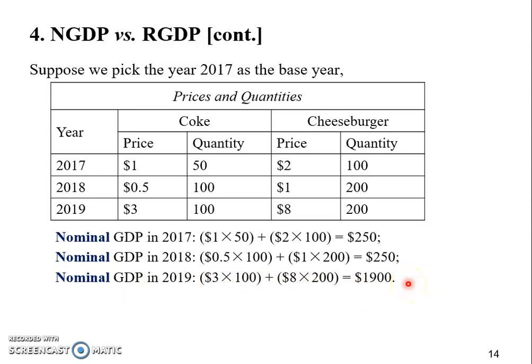The calculations we did before should be called nominal GDP, because they always use that year's price. For example, in 2017 we use one dollar as the price of coke and two dollars as the price of cheeseburger — those are the current price levels. I would suggest you pause the video and try to figure out the real GDP for these three years, taking 2017 as the base year.